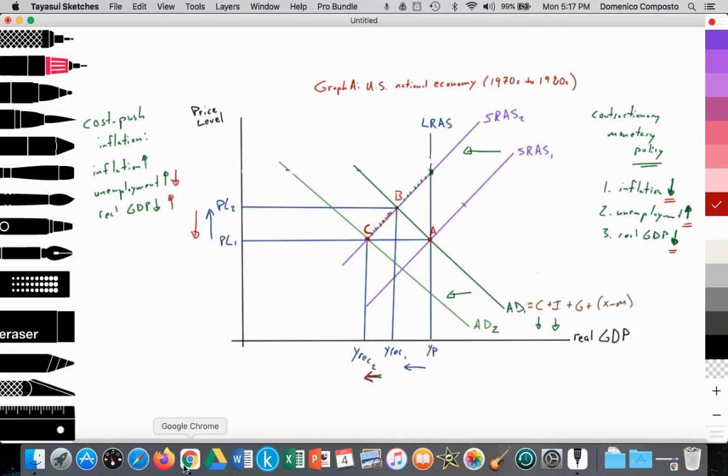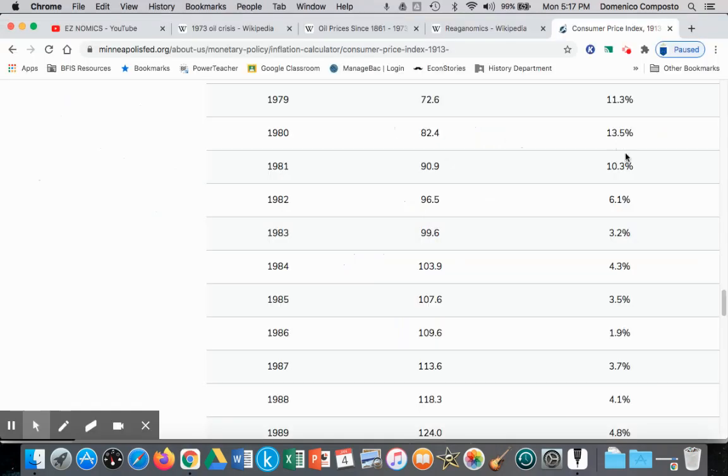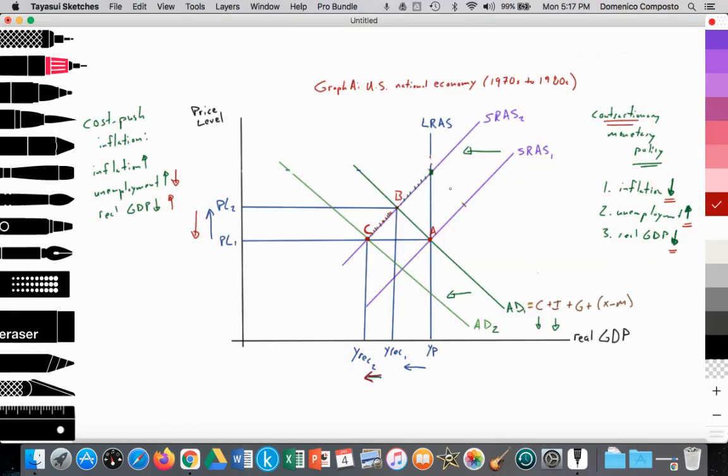Again, looking at the data, we see inflation falling: 13%, 10%, 6%, 3%. Part of that was contractionary monetary policy. Now, that was not the only solution. Reaganomics was, for the most part, a supply-side market-based policy.